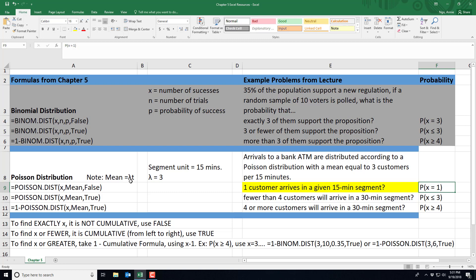So you need to identify the lambda which was given to us in the story and our t which is how many segments we're examining. In this scenario we are examining only one 15 minute segment.